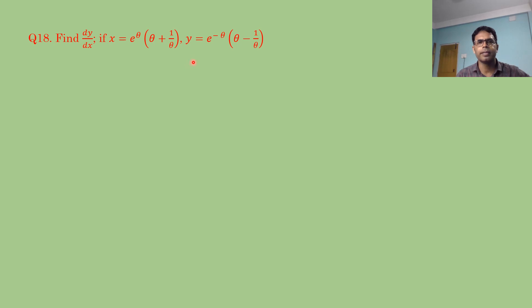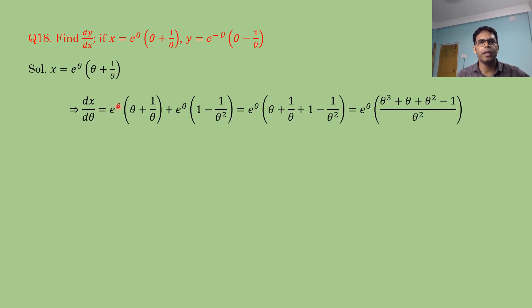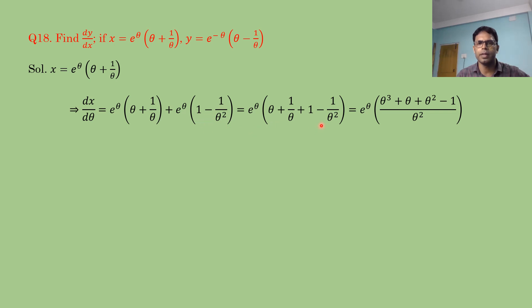For x = eᶿ·(θ + 1/θ), apply the product rule: dx/dθ = eᶿ·(θ + 1/θ) + eᶿ·(1 − 1/θ²) = eᶿ·[(θ + 1/θ) + (1 − 1/θ²)]. Taking common denominator θ²: dx/dθ = eᶿ·(θ³ + θ + θ² − 1)/θ².